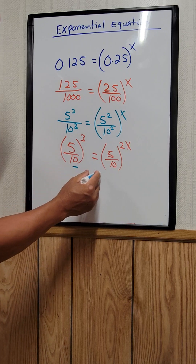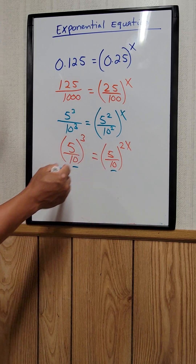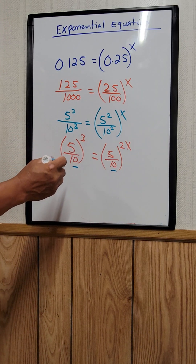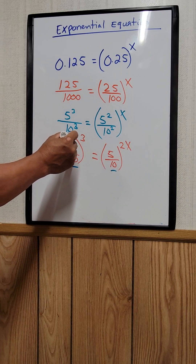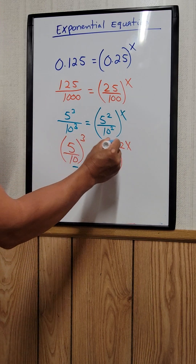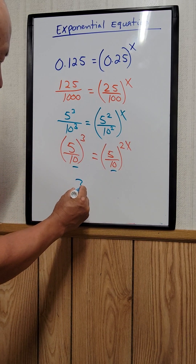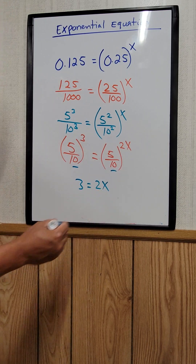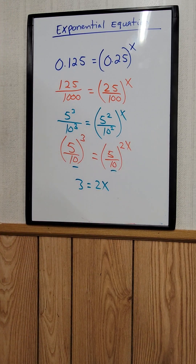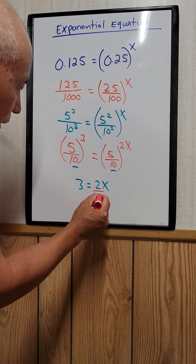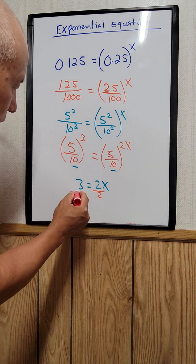Now since the bases are the same — look at the 5/10 and 5/10, they are the same — we can say that the exponents must be the same. So the powers must be equal: 3 is equal to 2x.